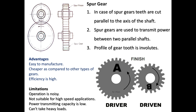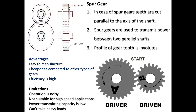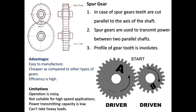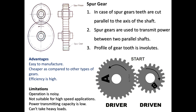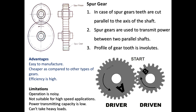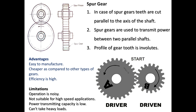Limitations of spur gears are: operation is noisy, they are not suitable for high speed applications, the power transmitting capacity is low, and they cannot take heavy loads. In the diagram you can see that the gears always rotate in opposite directions — the driver gear A rotates anticlockwise whereas the driven gear B rotates clockwise. This is a basic principle of a gear drive.